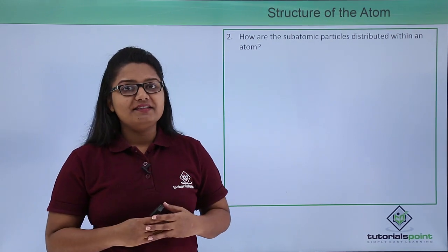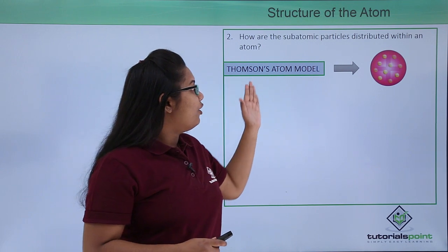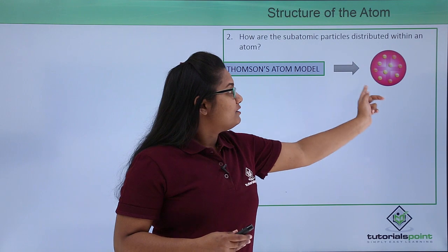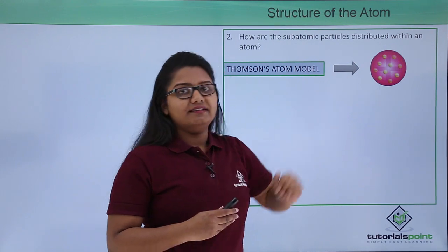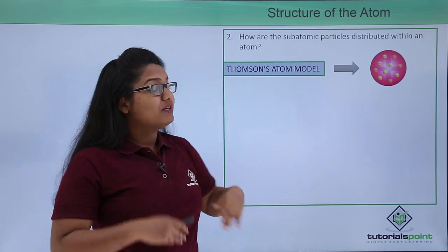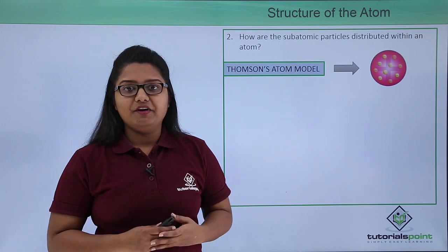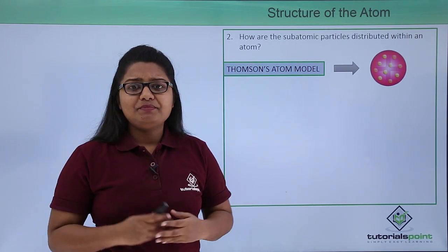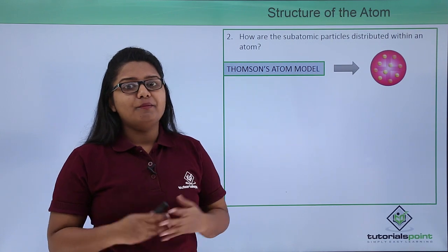Among those models, the first one was Thomson's atomic model, which looked something like this. The arrangement of positive and negative charges were like this. Now this model was also called the plum pudding model. But this model was not accepted because of some drawbacks.